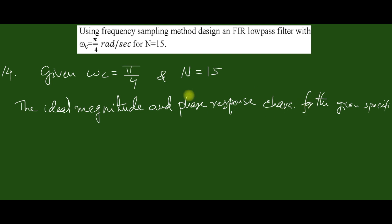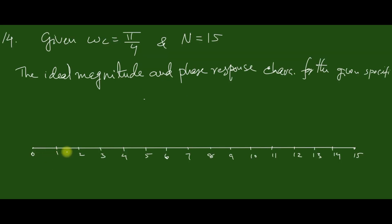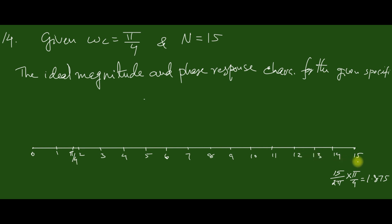First, draw a line and mark the 15 sample points. The next step is to determine the location of pi/4. This location can be obtained as (15 / 2pi) times (pi/4), which equals 1.875. So the location of pi/4 is approximately at 1.875. Corresponding to 15 we have 2pi, and at 7.5 we have pi.